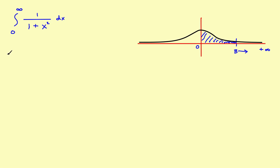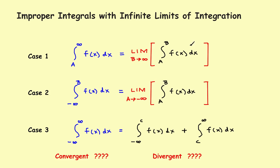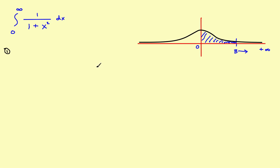Step one: we're doing the inside part, trying to find a definite integral first, then in step two we'll take care of the limit. We'll set it up as the integral from zero to this fixed number b — so from zero to b of one over one plus x squared, dx.